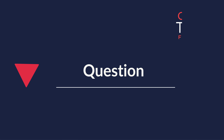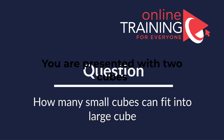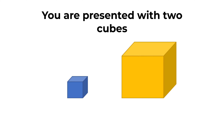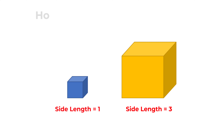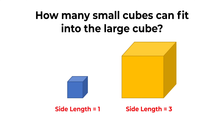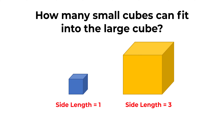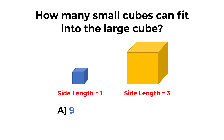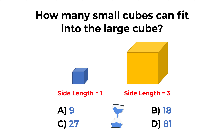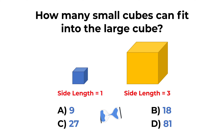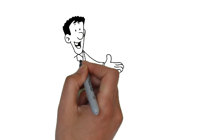Here's a cool question you frequently see on the test. You're presented with two cubes: one cube has side length equal to 1 unit and a second larger cube with side length equal to 3 units. How many small cubes can fit into the large cube? Choices: A is 9, B is 18, C is 27, and D is 81. Give yourself about 20 to 30 seconds — about as much time as you get on the real test.